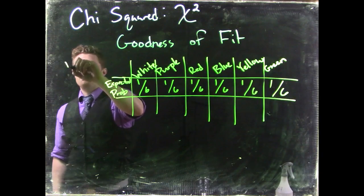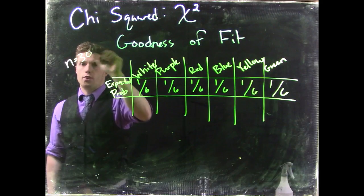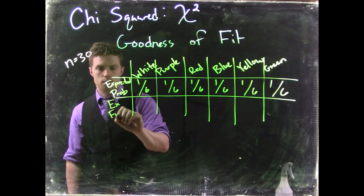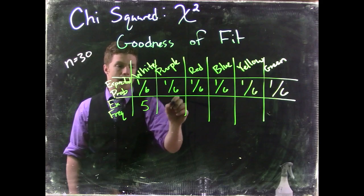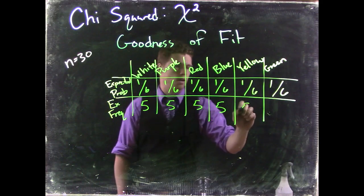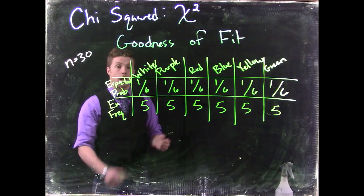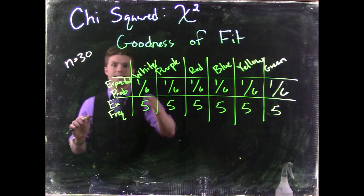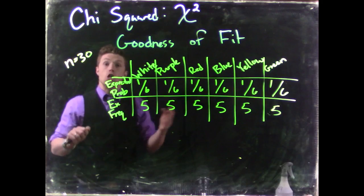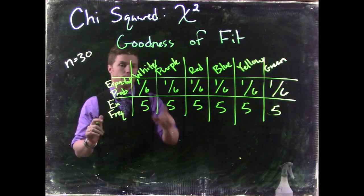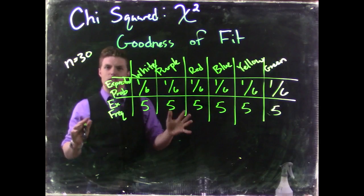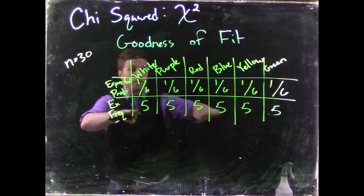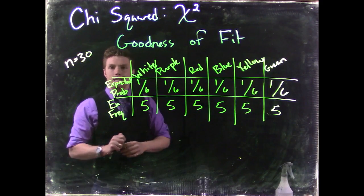So let's say that we had a sample size of n equals 30, and then the expected frequency would be five in each of those categories. Now, if we actually rolled the fair dice, would we see exactly five in each of those if we rolled it 30 times? No, it's possible, but we could also get like a six here and a four there and some other variations. But overall, if we were to repeat this over and over again, on average, we would expect to see five on each of those.